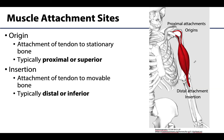So muscle attachment sites — what I mean here is the sites or the locations that a muscle will actually connect or attach to the bone. When I say the muscle attaches, really what I'm talking about is the muscle tendon attaching to the bone. When a muscle contracts, one of its attachments usually remains fixed, or in other words that bone doesn't move, while the other attachment site does move, and it's typically pulled toward the immovable attachment site.